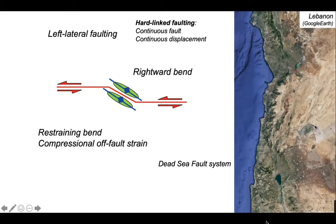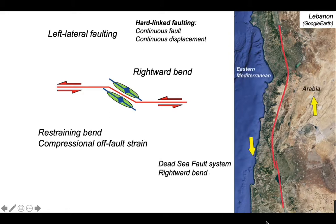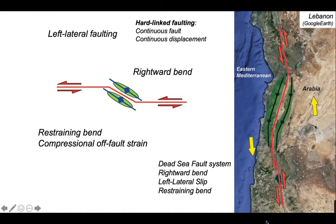These compressional structures will certainly be represented topographically on the continents by uplifted mountain ranges. This is a satellite image along the eastern Mediterranean Arabian margin, more or less centered on Lebanon. Running through this image is the Dead Sea fault system, accommodating left lateral movement due to the northward movement of Arabia relative to the eastern Mediterranean. The fault has a rightward bend and is left lateral — the same setup as the cartoon. That geometry is picked out in the landscape by two mountain ranges: Mount Lebanon and the Anti-Lebanon, shown in green. They are basically very large antiforms and a classic example of a restraining bend with compressional off-fault deformation.